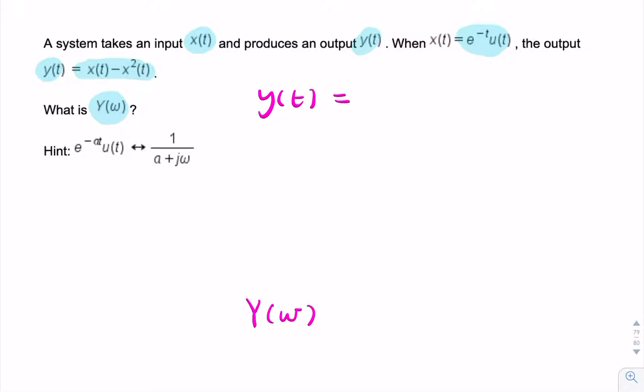y in the time domain is simply x(t) - x²(t). x(t) is e^(-t)u(t), and x squared is the same squared.